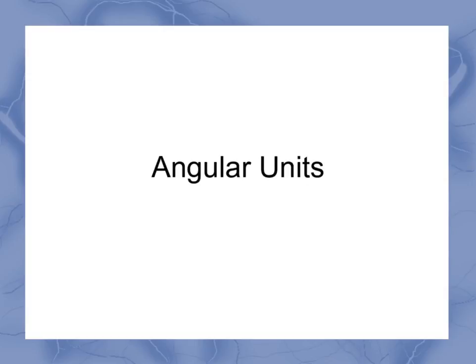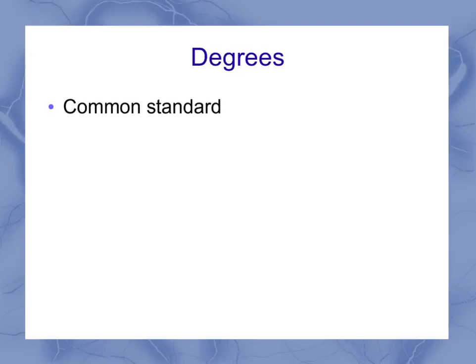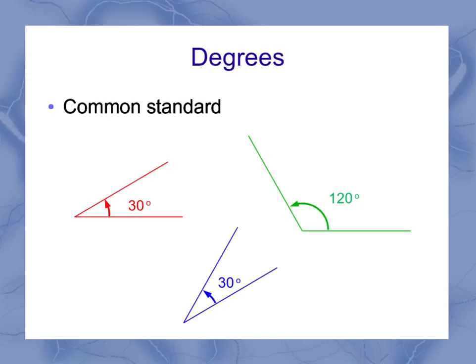So now we're looking at angular units. Degrees is one of the really commonly used units for measuring angles. You're probably all familiar with this. You can have some small angles, you can have some bigger angles. And you don't have to measure these angles with one of the lines being horizontal. You can have two different lines in different directions and measure the angles between them.